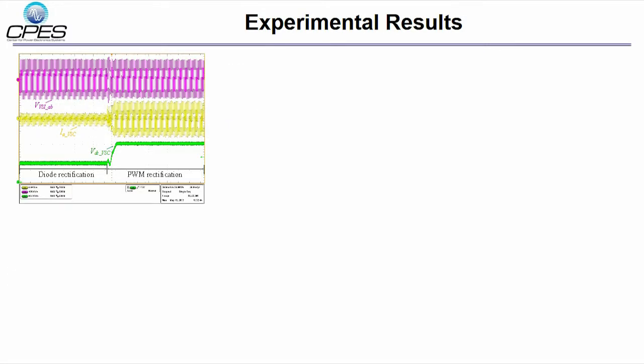Here are the experimental results. First, VSI is operated under steady state. The load converter is running under the diode rectification mode. The load converter PWM control is started. The output voltage of the load converter is regulated to 270V. The system is running under the stable condition.